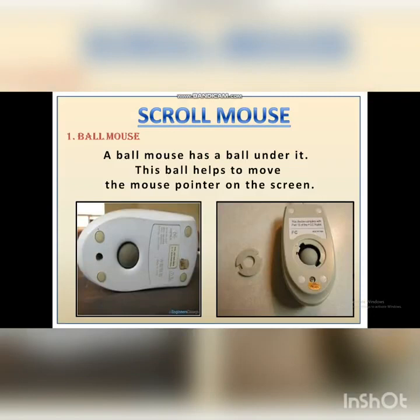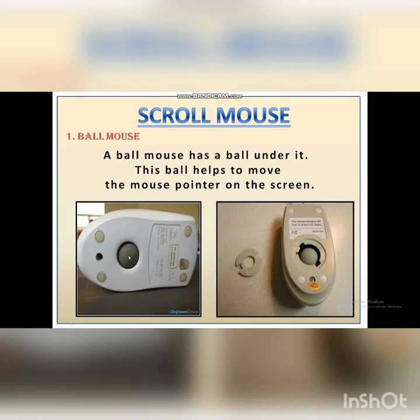Now let's see what is a scroll mouse. Number one, ball mouse. A ball mouse has a ball under it. This ball helps to move the mouse pointer on the screen. Children, can you see the first picture? There is a small rubber ball which helps the mouse pointer to move around the monitor, so that wherever we want to point, it helps us go to that particular point. In the second picture also, there is a small rubber ball which helps to move around the monitor. But nowadays we don't use this ball mouse.